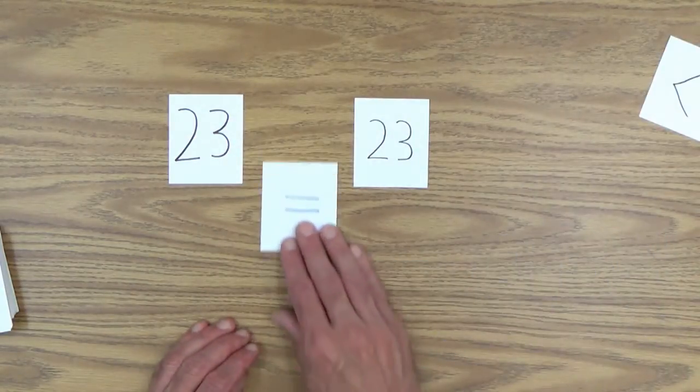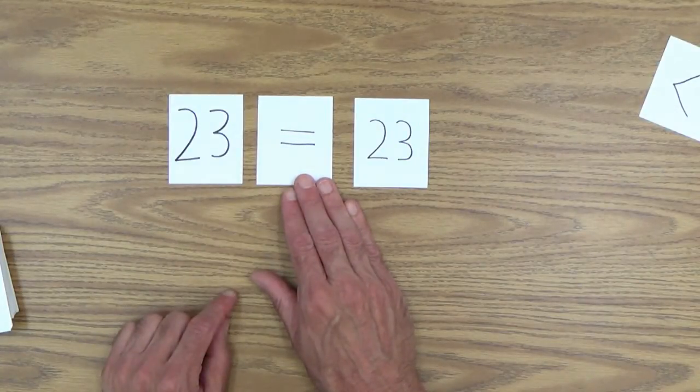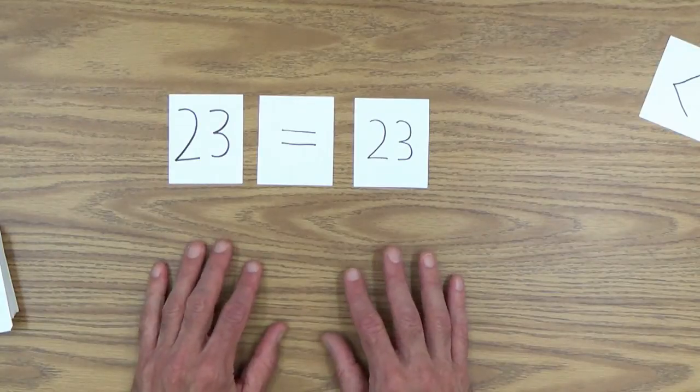So you say, well, we have a sign for the same as, and it's called the equal sign. And that's what it looks like. So throw a couple of those in there too.